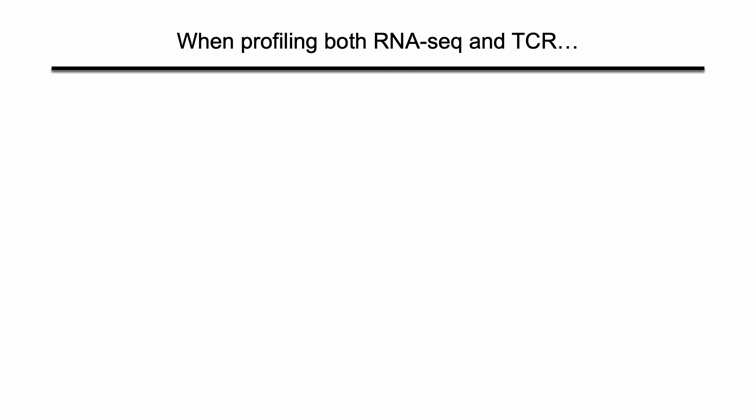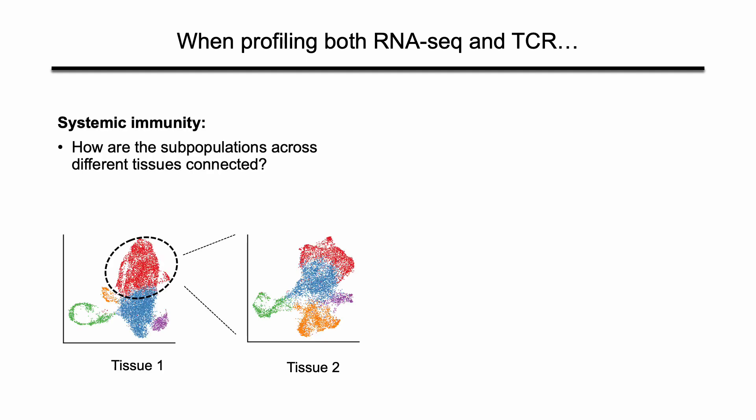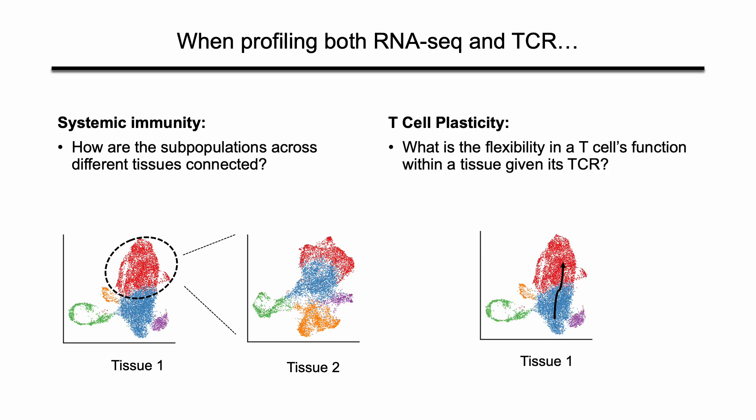What questions can we ask when we have combined RNA and TCR sequencing data? Here are two examples. Firstly, in terms of systemic immunity, we can ask how the subpopulations across different tissues are connected with each other. And secondly, in terms of T cell plasticity, we can ask what is the flexibility in the T cell's function within the tissue given its TCR.